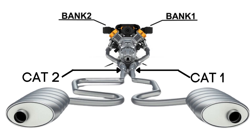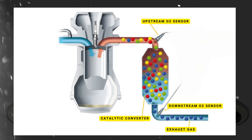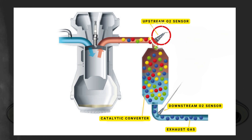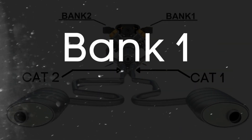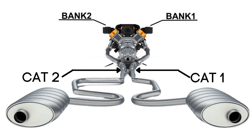Each bank has its own exhaust line, and each exhaust line is equipped with two catalytic converters. Here's where the oxygen sensors come in — each catalytic converter has two oxygen sensors: an upstream sensor, which we call Sensor 1, and a downstream sensor, known as Sensor 2. So when we talk about Bank 1, Sensor 1, we're focusing on the oxygen sensor that's upstream on the side of the engine where cylinder 1 is located.